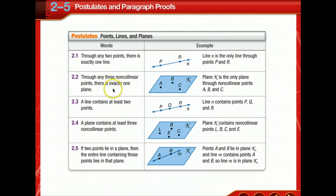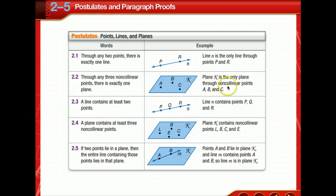Secondly, through any three non-collinear points, there is exactly one plane. We've learned that the definition of a plane is that it has three non-collinear points and we can name it by those three non-collinear points. Also, we can name it as plane K. So plane K is the only plane through non-collinear points A, B, and C.